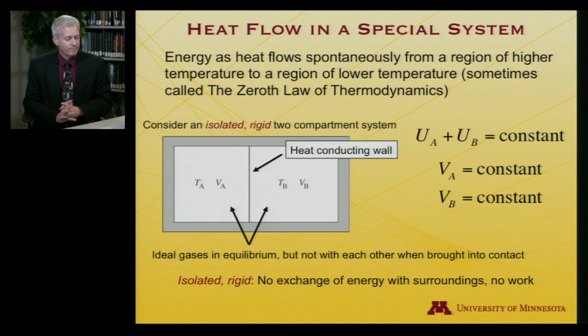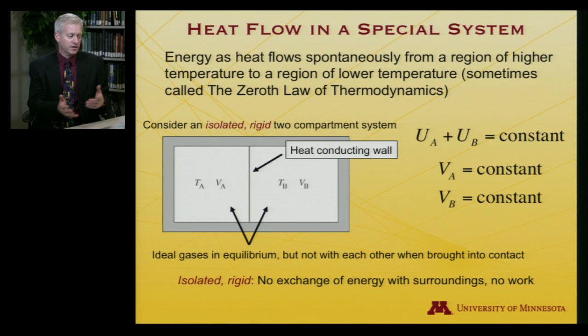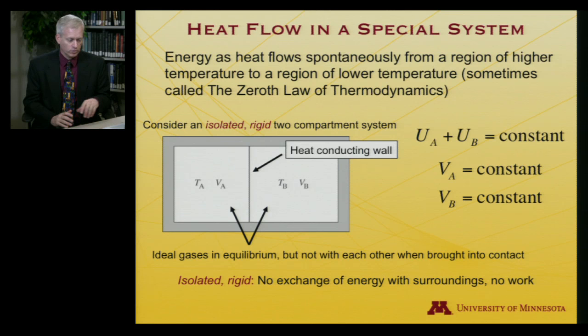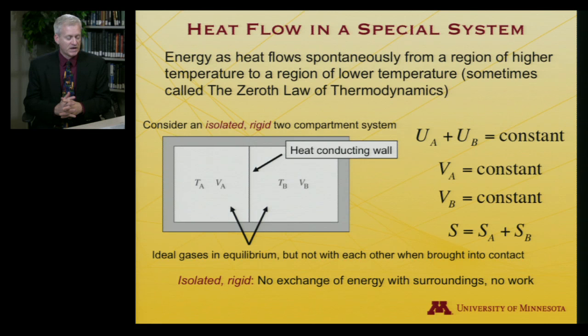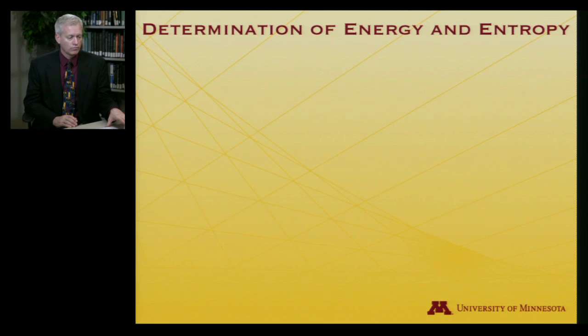Let's imagine we're working with ideal gases — that makes life simpler, though it's not a requirement. Any other system can always be imagined brought into contact with ideal gases in a similar arrangement, and it would have to follow the same behavior because of energy conservation. Although they are individually in equilibrium, when brought together they may be at different temperatures. The entropy of the total system is defined as the entropy of side A plus the entropy of side B.